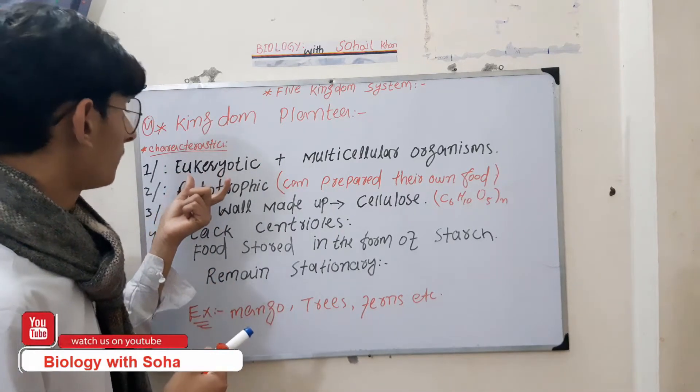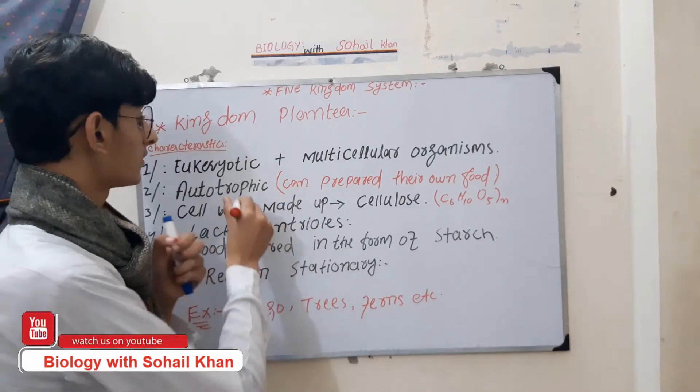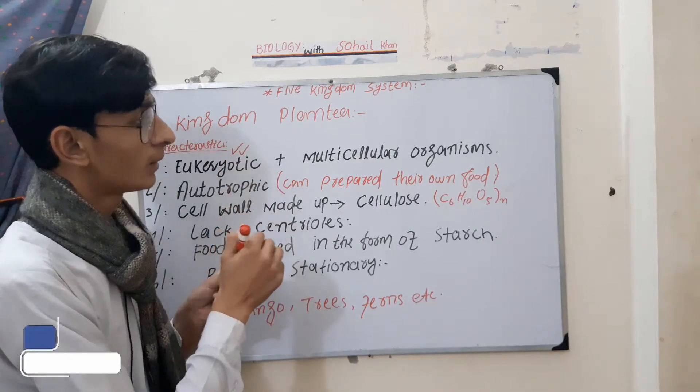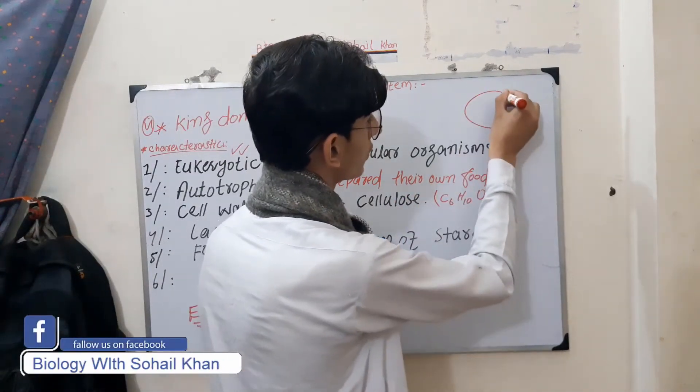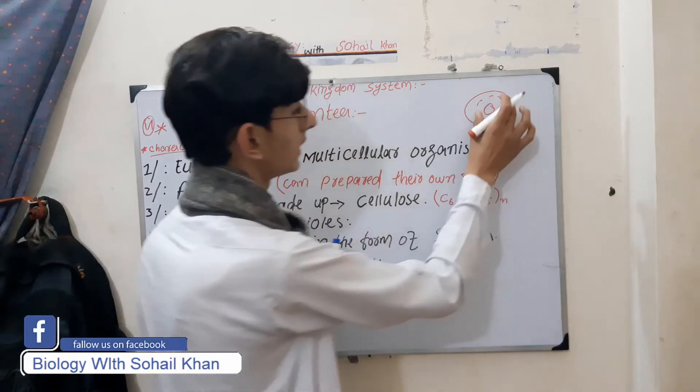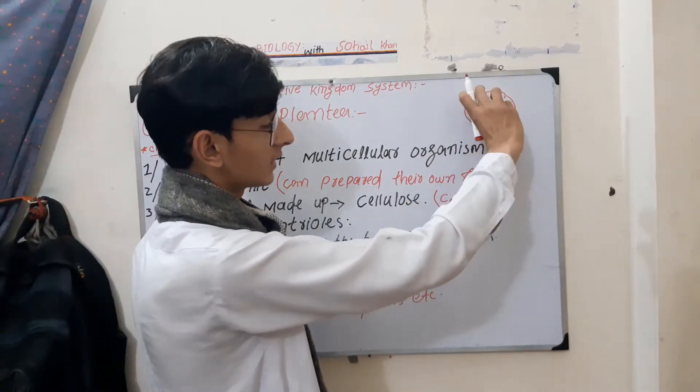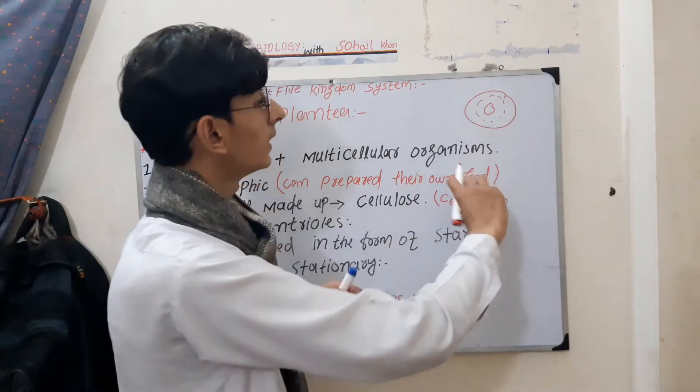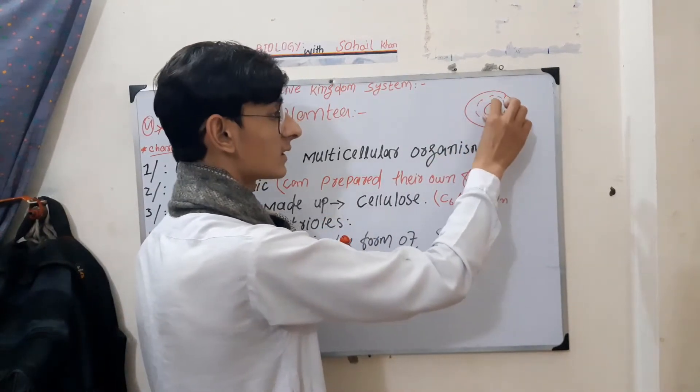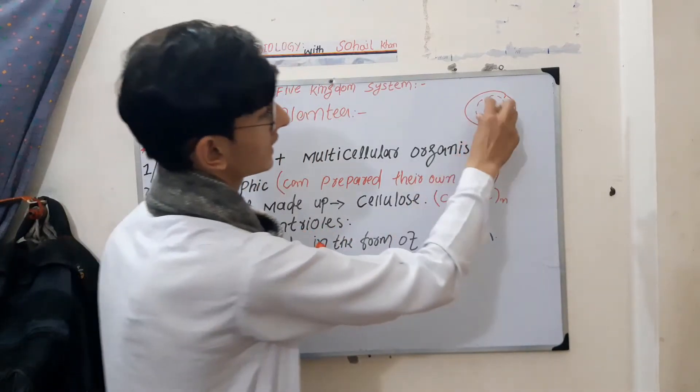Kingdom Plantae consists of eukaryotic or multicellular organisms. Eukaryotic means they have a nucleus and cell membrane. The nucleus and organelles are present in the cell. The organelles of the cell are formed as structures within the cell.